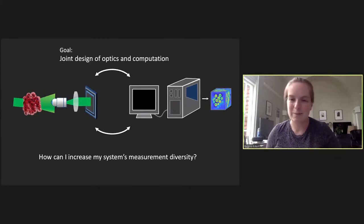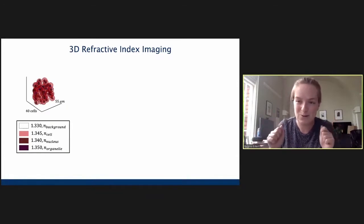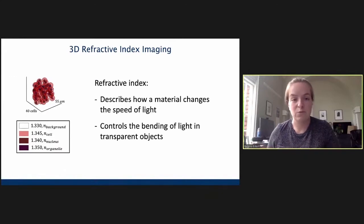So, this is actually really difficult. We can't just throw these systems into some big machine learning algorithm and tell it to spit out, how do I actually measure these things best? So, in this talk, I'm going to be talking a little bit more specifically about a question that I've been asking for 3D refractive index, which is, how can I increase my system's measurement diversity? I'll kind of get to exactly what I mean by that in a little bit. But for now, we're going to dive into 3D refractive index imaging. So, in this kind of imaging domain, we're using the native contrast of some really small organism to reconstruct its structure. So, refractive index, just as a reminder, describes how a material changes the speed of light and also controls the bending of that light in transparent objects.